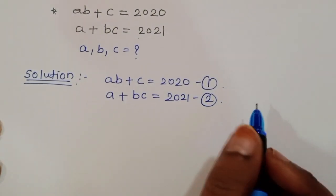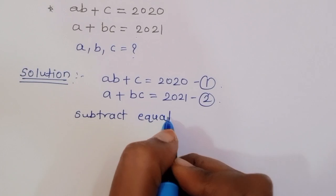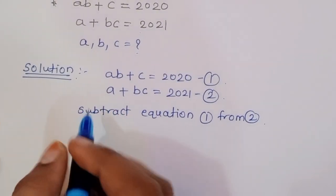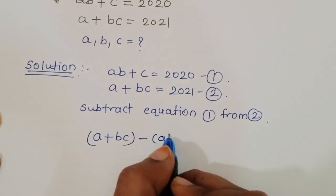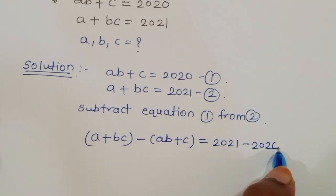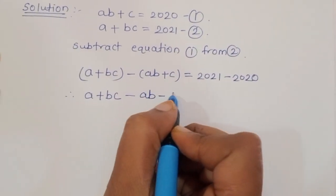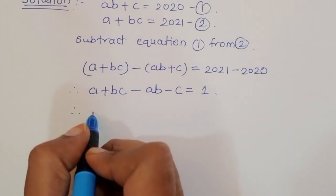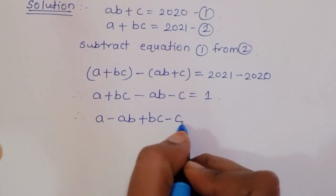Now we can subtract equation 1 from equation 2. We get (a+b)c minus a(b+c) = 2021 minus 2020, therefore a + bc minus ab minus c = 1.